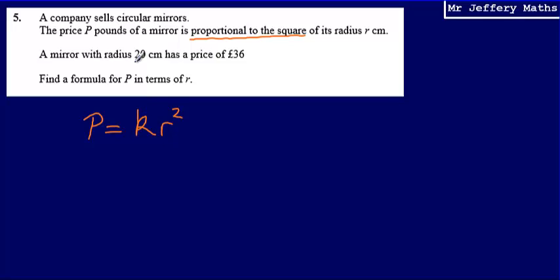So to find out what that is, we are going to take the two values that we know. So the radius is 20, and when the radius is 20, the cost of the mirror is 36 pounds. So P is 36 when the radius is 20. So what we can then say is that k multiplied by 20 squared will give me 36. 20 squared is 400, and so that means that 400k will be equal to 36.